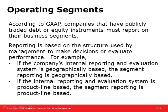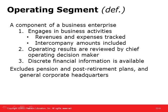Corporate headquarters and functional departments that don't earn revenues are not operating segments. The costs of these groups are allocated to the operating segments so that the impact of maintaining these groups is reflected in the operating segment reports. An operating segment is a component that has revenues and expenses tracked, with intercompany amounts potentially included, operating results reviewed by the chief operating decision-maker, and discrete financial information available about the component.